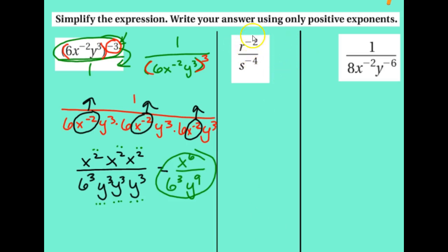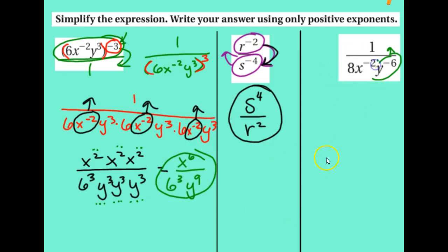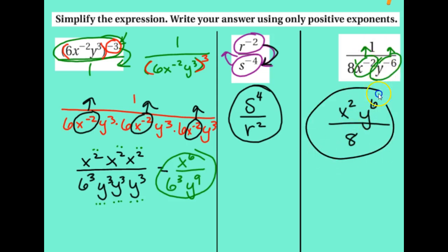For the fraction with r and s variables: in the numerator, r to the negative 2 is negative — move it to the bottom. In the denominator, s to the negative 4 is negative — move it to the top. So s^4 comes to the top, and r^2 goes to the bottom. You can't simplify different letters, so that's the answer: s^4 over r^2. On the last one, some people make the mistake of lumping the 8 and x together — you can't. The 8 has an exponent of 1, so only the x moves. Leave the 8 on the bottom. The answer is x^2 y^6 over 8.